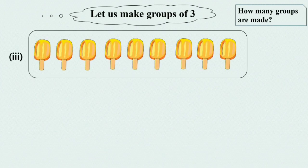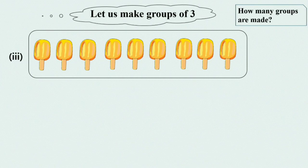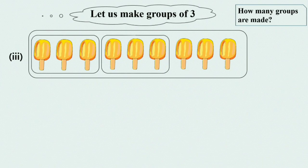What's here? Yes, tasty 9 ice creams. We make 1 group of 3 ice creams. Here is the 1st group of 3 ice creams. Now we will make 2 groups of 3 ice creams.